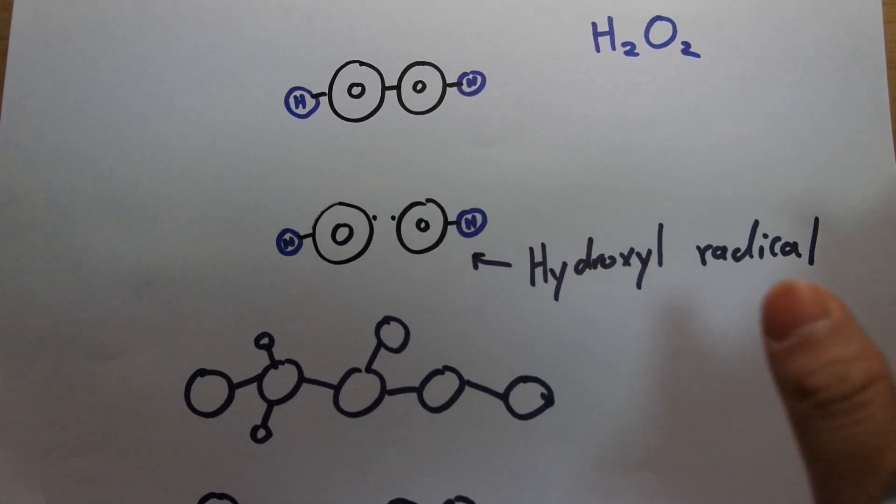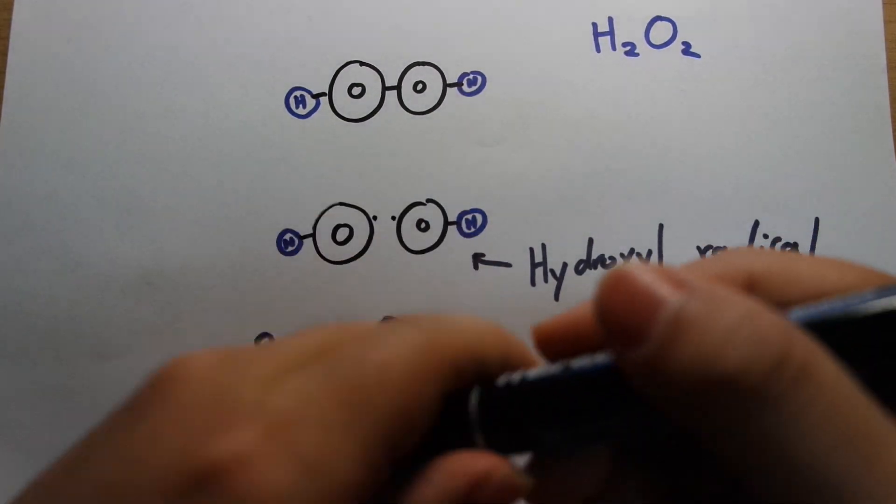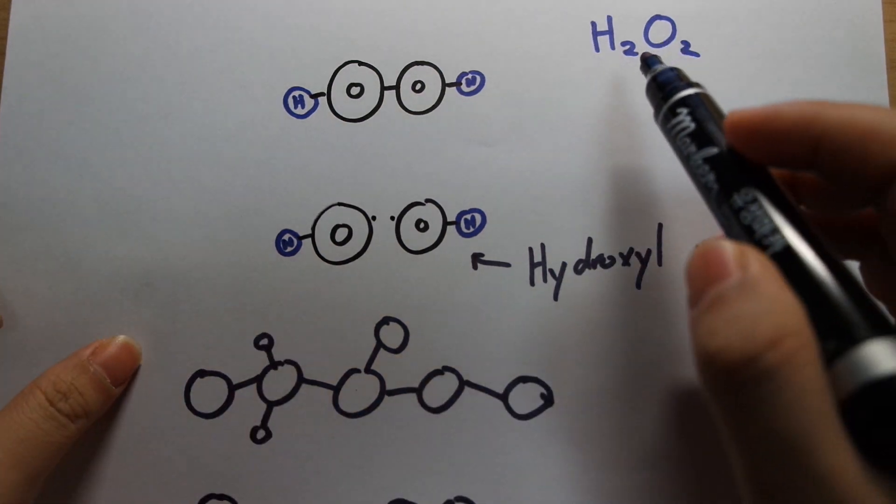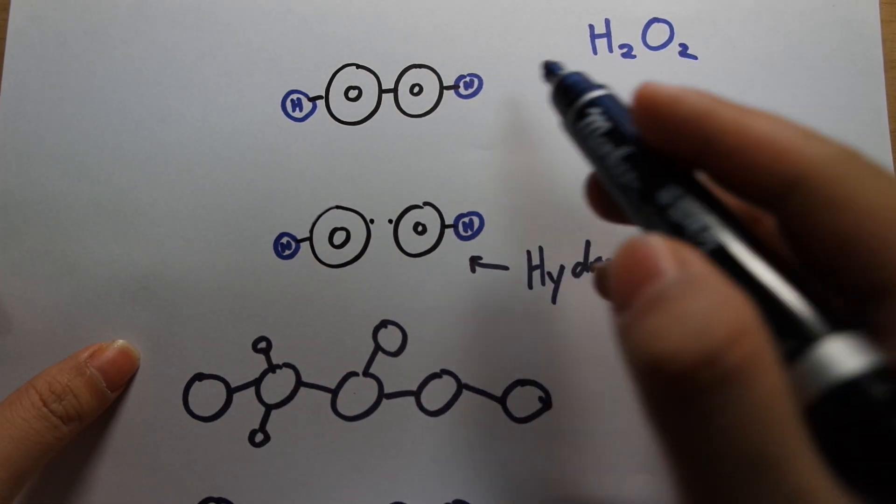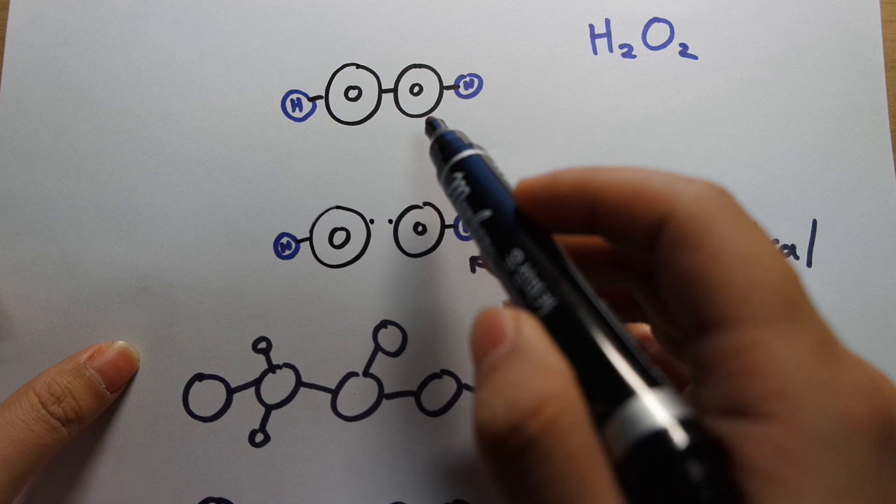Okay, so first let me discuss how hydrogen peroxide works. So hydrogen peroxide has the molecular formula H2O2, and its structure looks like this.